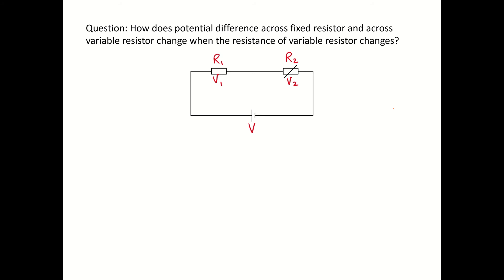For this session we are going to discuss how potential difference across R1 and R2 changes as the resistance across R2 changes. We are not going to use numbers here, we're just going to use algebraic expressions. R1 and R2 are connected in series, so the current flowing through R1 is equal to the current flowing through R2.